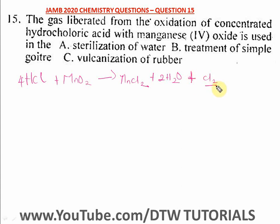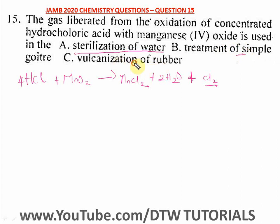So Cl₂ is the gas liberated — that is chlorine. Now, what can we use chlorine for? We use chlorine for the sterilization of water; we add it to pools. For treatment of goiter we use iodine, and for vulcanization of rubber we use sulfur.